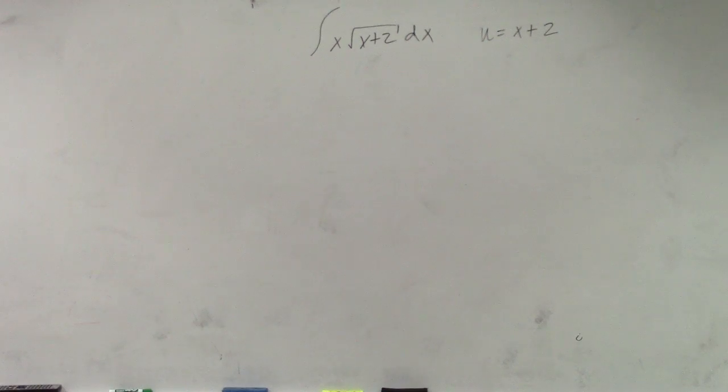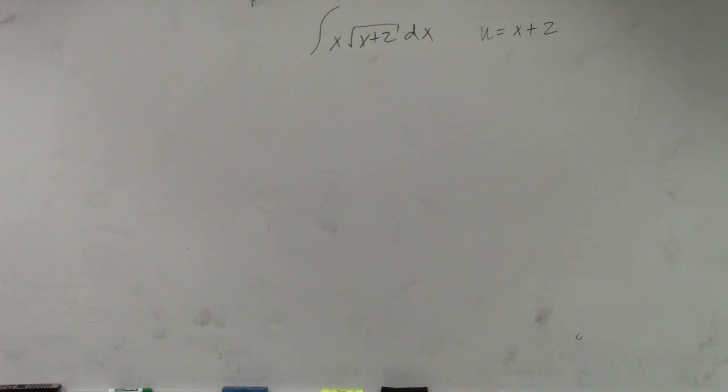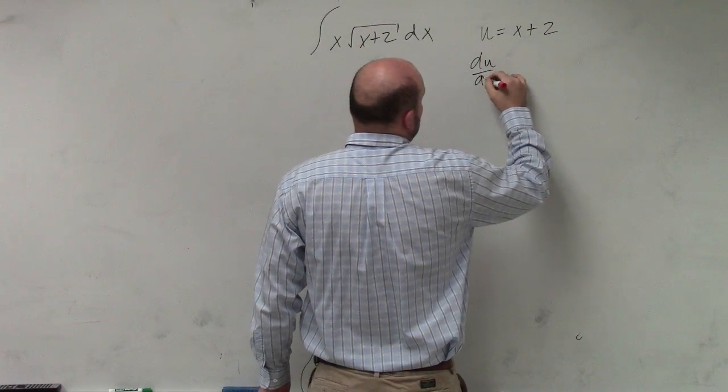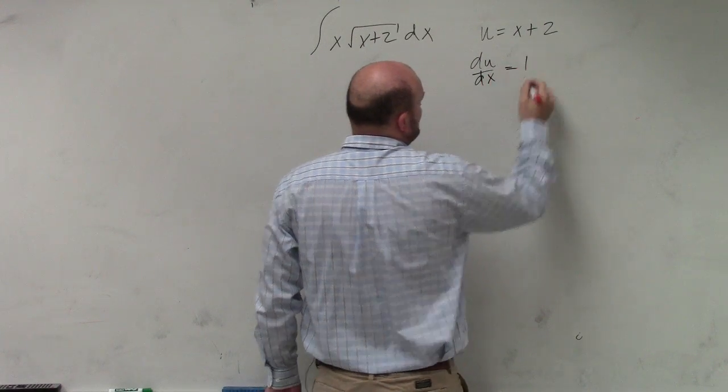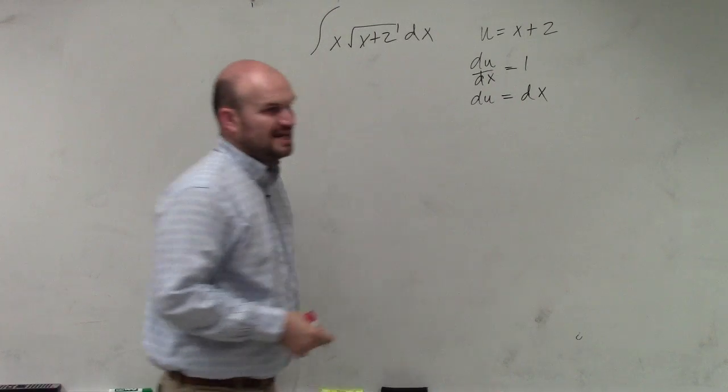And once I have that as x plus 2, then obviously that's going to be my u. Now the next thing I'll want to do is go ahead and take the derivative of that to get my du dx, which is just equal to 1, so I could say du is equal to dx, right?